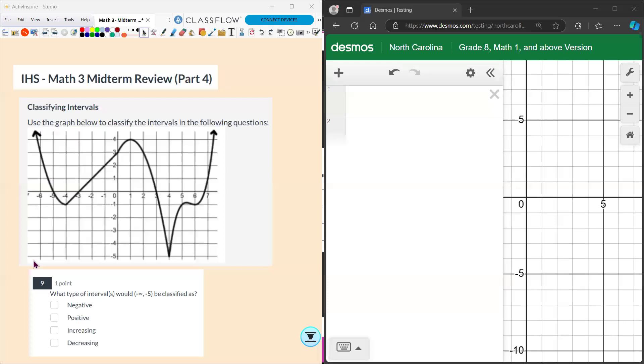So just like the last one, negative infinity means it starts forever over here, so there's really no ending, but negative 5 is right there. We want to look at what's happening to the graph from the left side all the way until you hit negative 5.